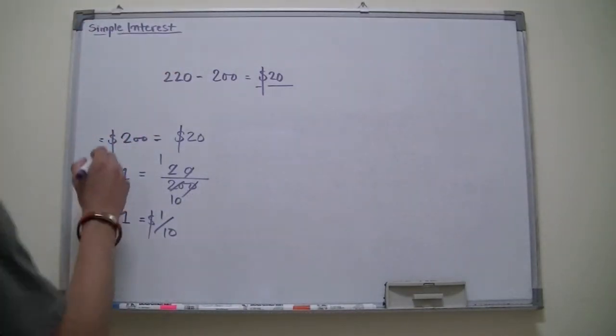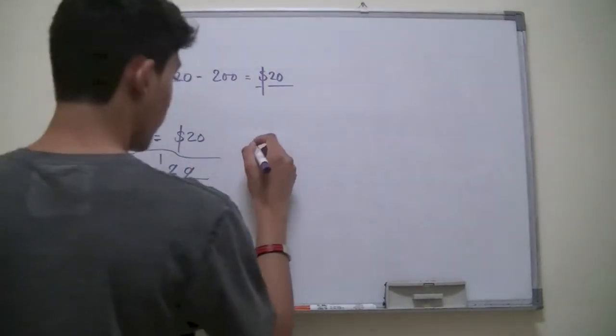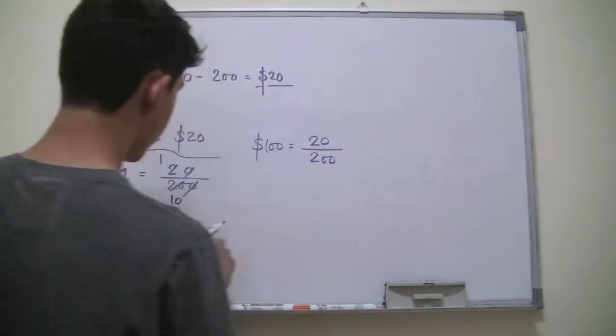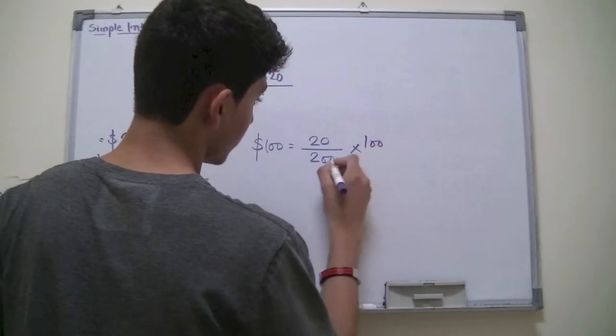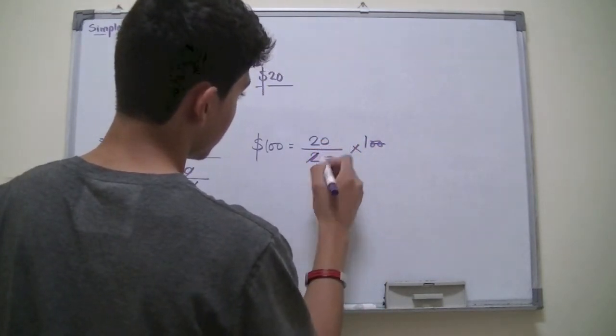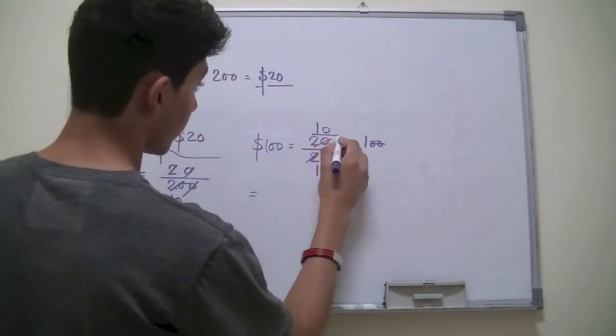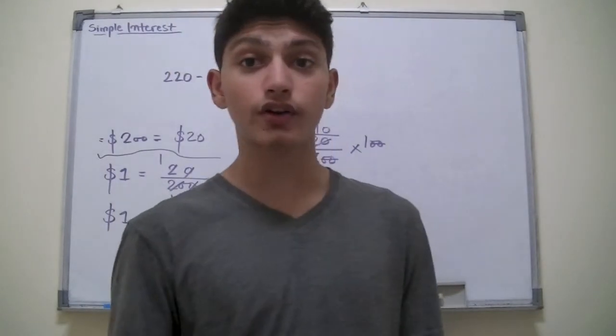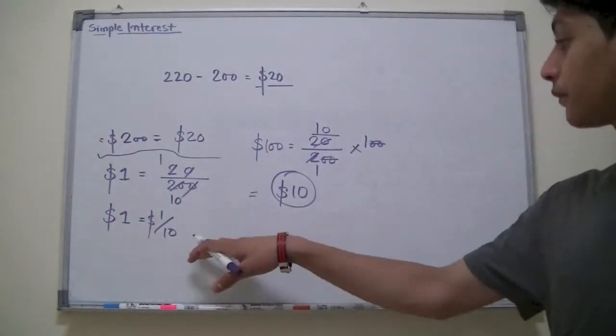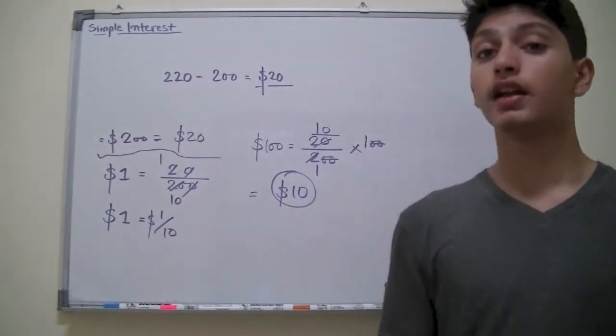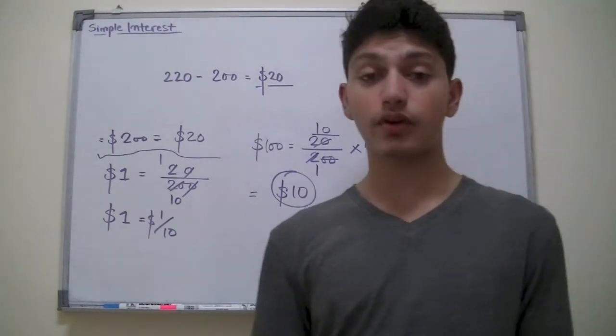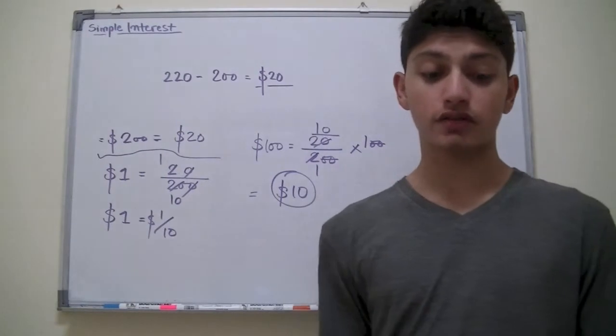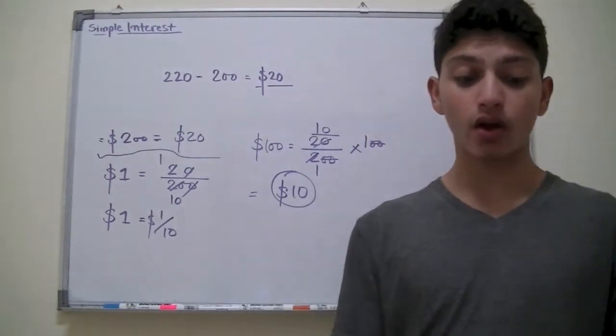So for $100 you would have $10, and we can find this using the same method. $100 would be equal to $20 over $200, which is $1 over $10 times $100, so that's $10. We can find it for $200, $300, $400, and so on. Basically, the rate percent is 10% per annum. Annum is basically equal to one year.